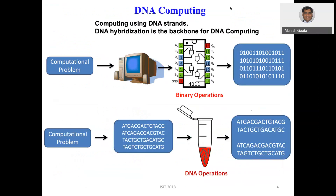In DNA computing, we do computing using DNA strands, and DNA hybridization is the backbone — it is also the source of errors. The analogy with normal computers: in classical computing, we convert a problem into binary operations and solve it using binary strings. Similarly, in DNA computing, we convert a computational problem into strings of A, C, G, T, perform DNA operations, and the answer is also in the form of DNA strings, which we read to get the answer.